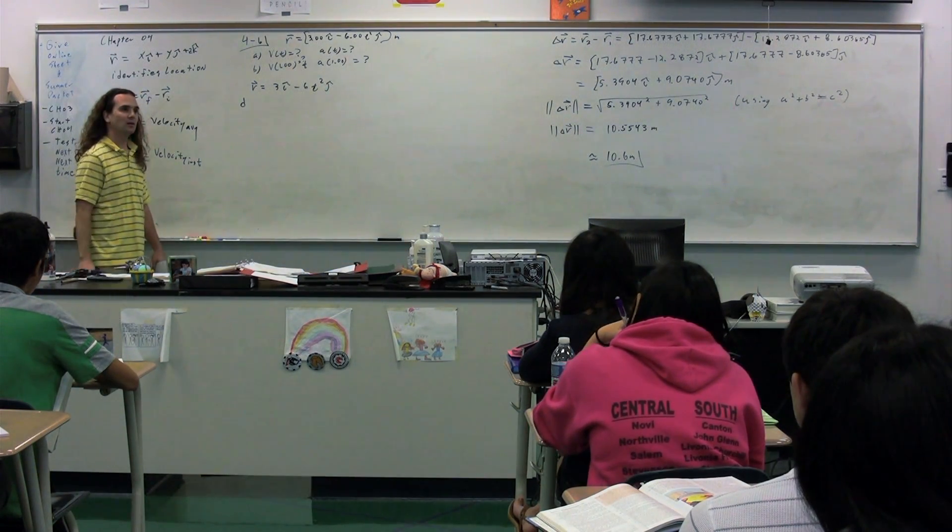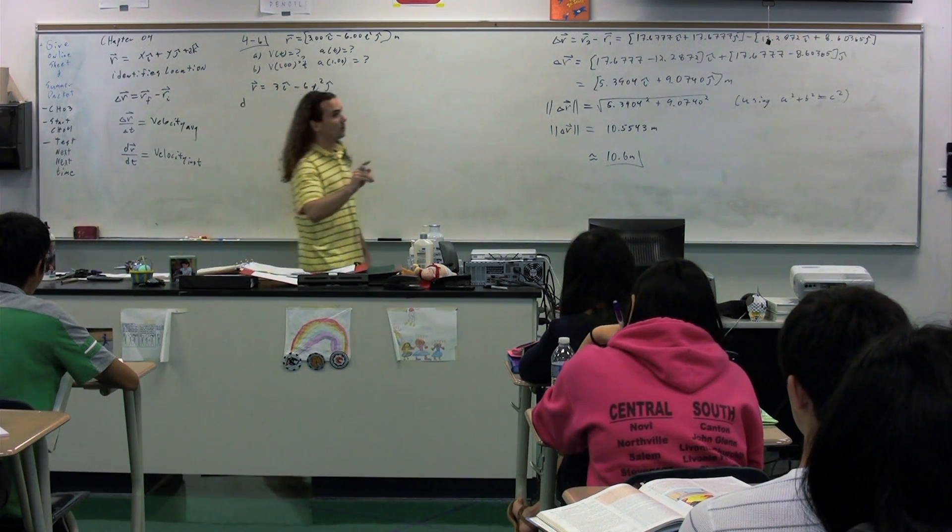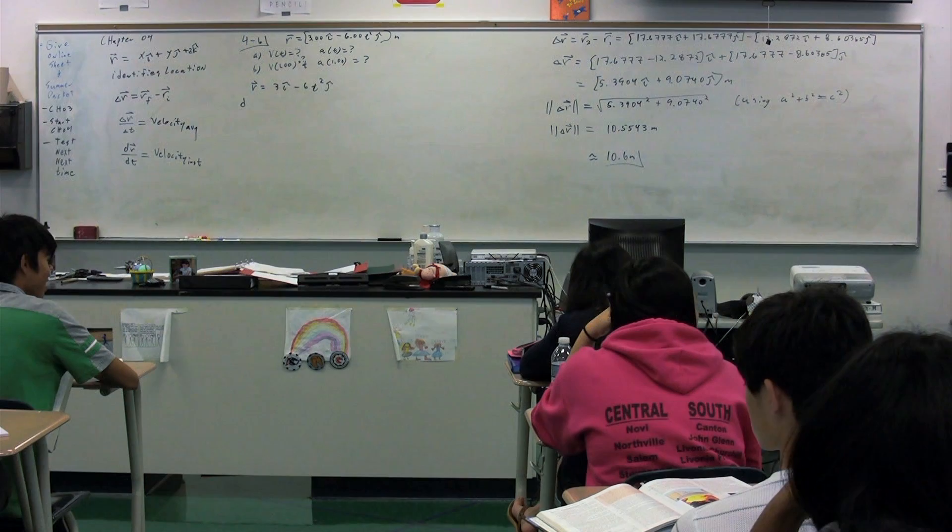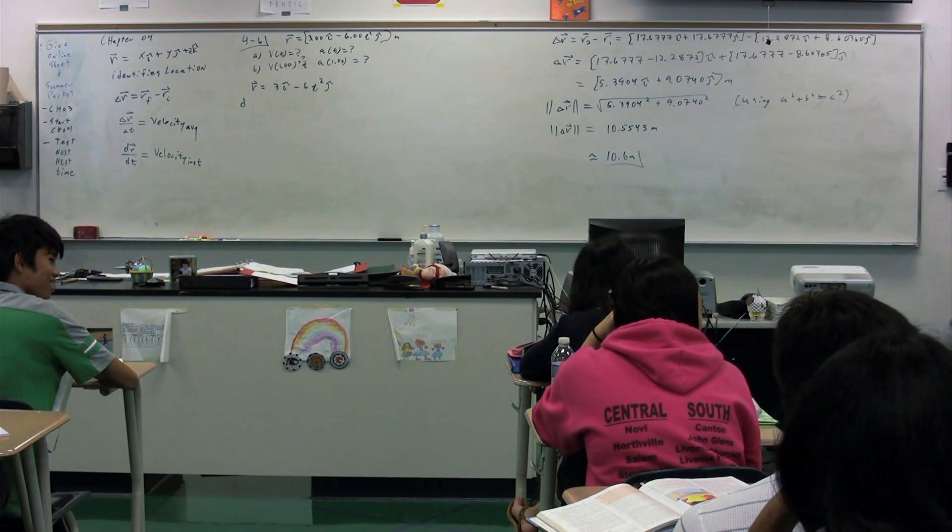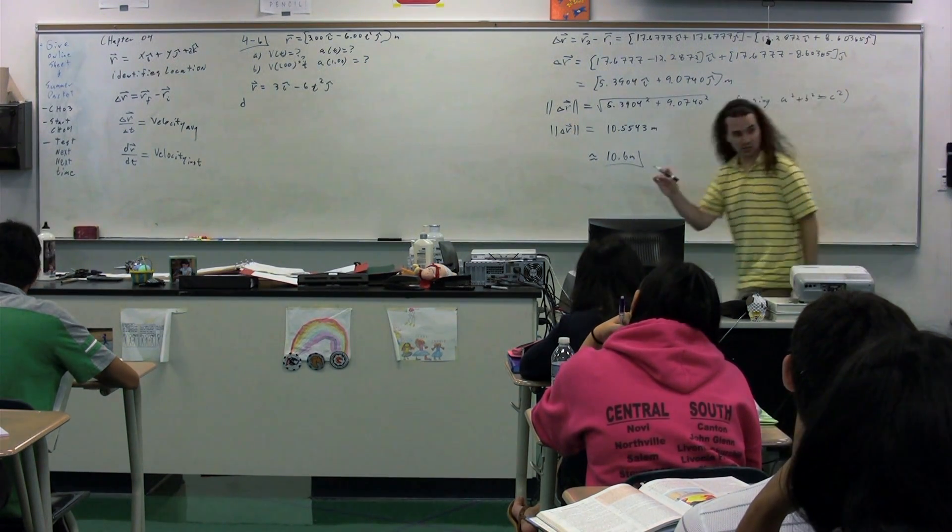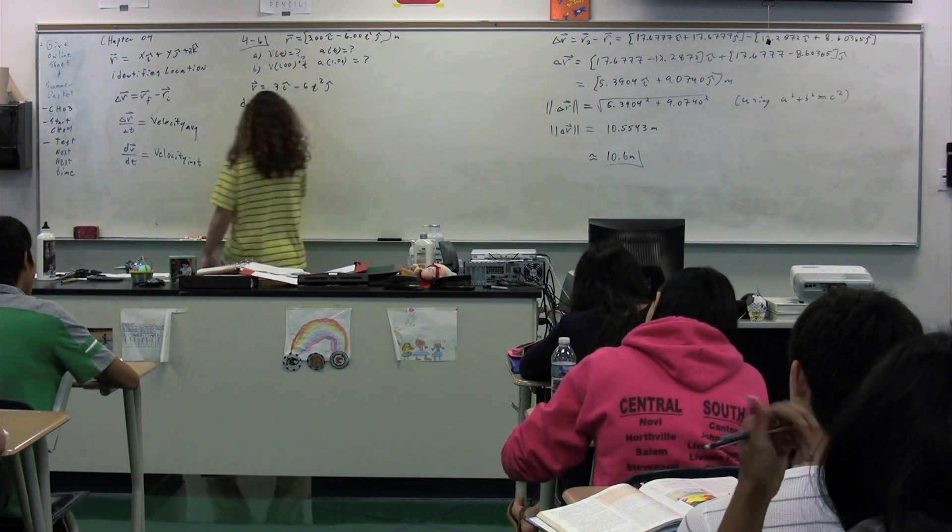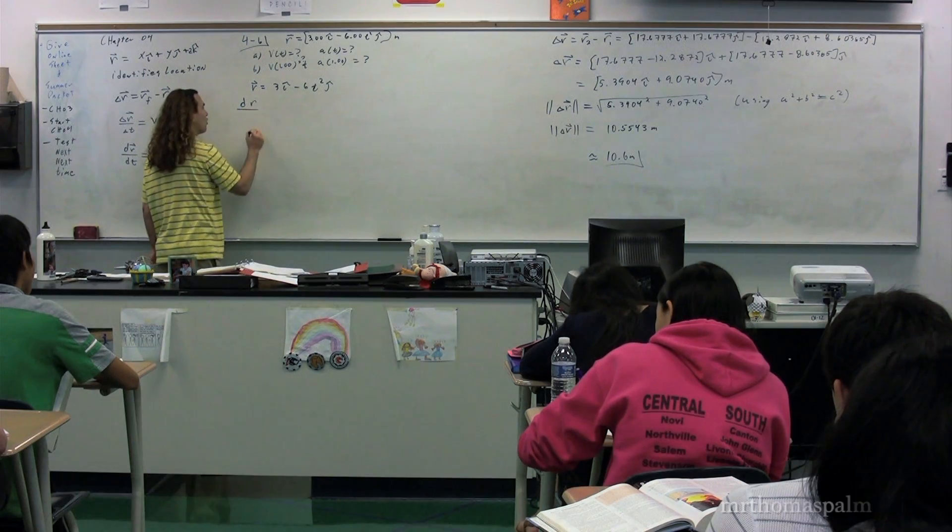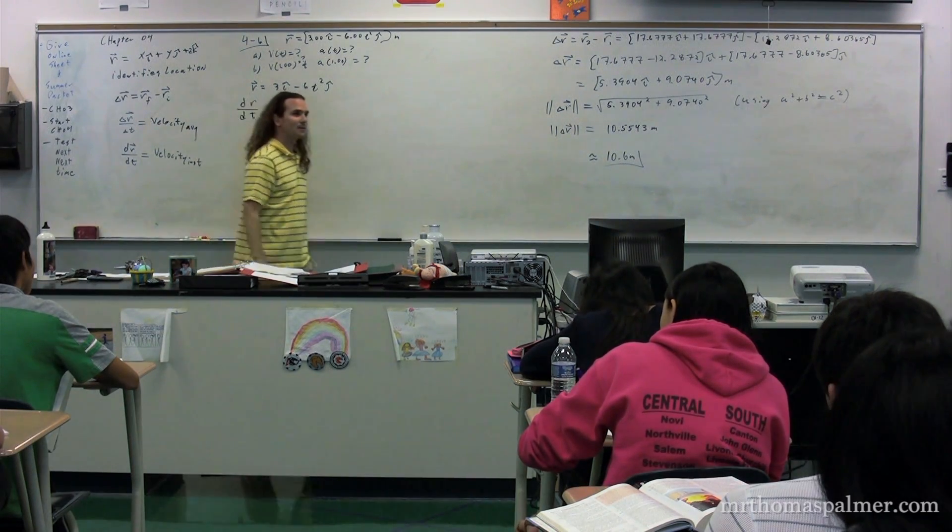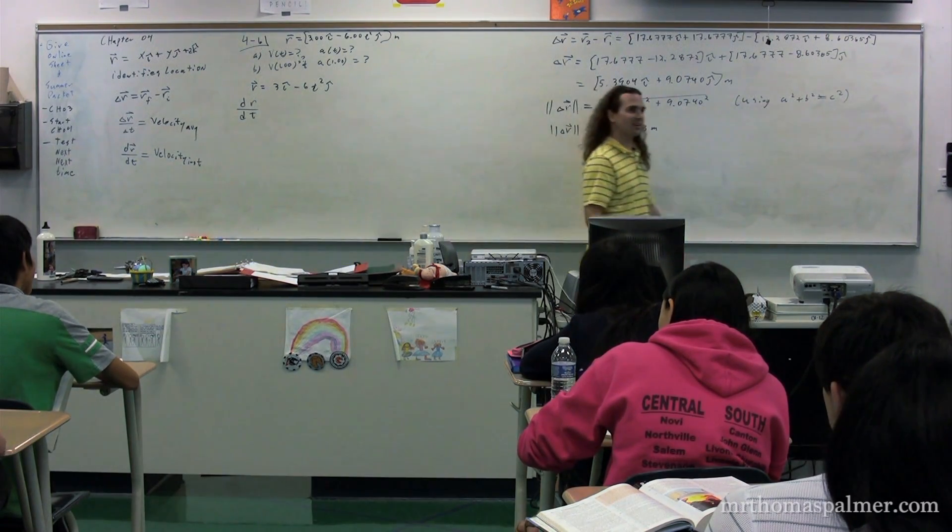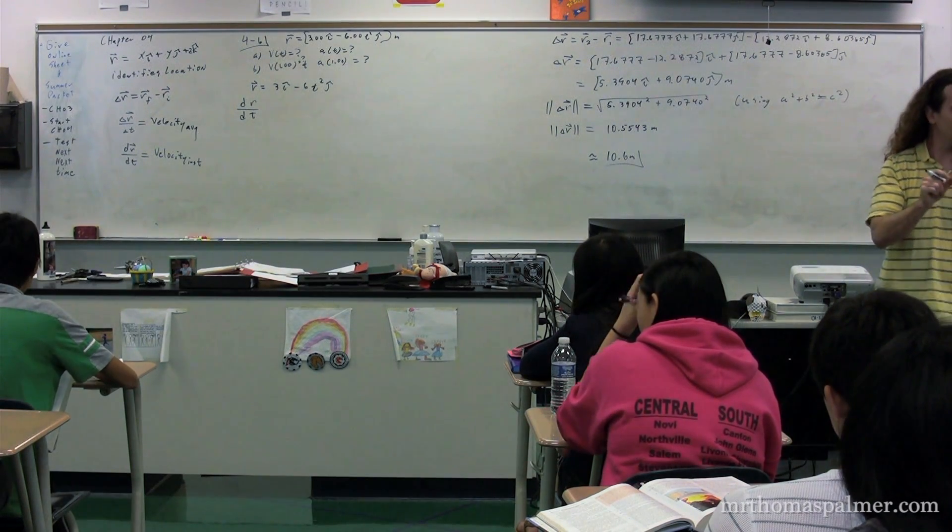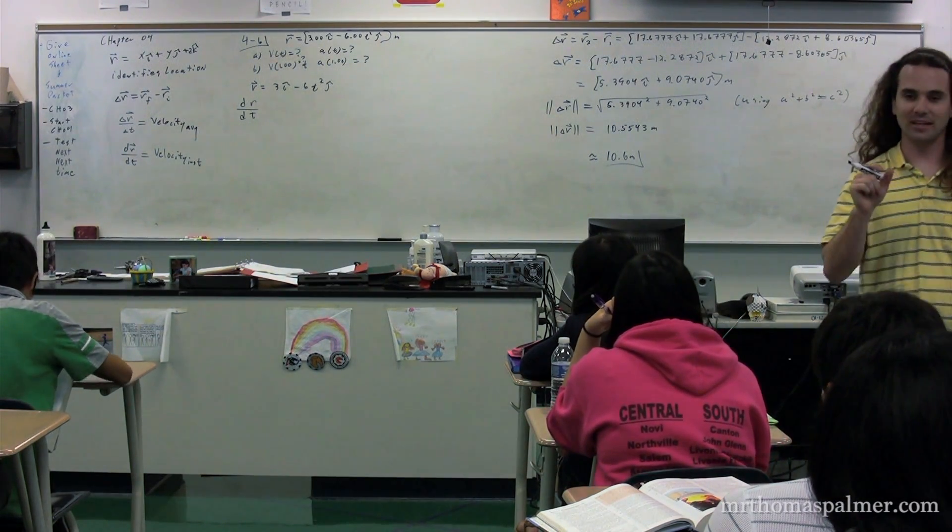The displacement? No. The delta r would be the displacement. What does r represent, Carlon? R represents position. Position, okay. So the derivative of position over dt. What does that mean, over dt? With time. What is with time? You're missing two words in there. Landon, what two words is she missing?